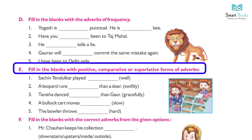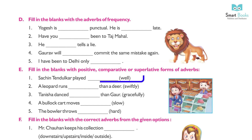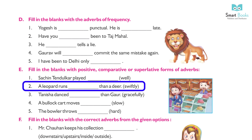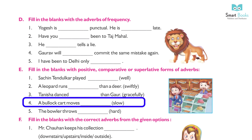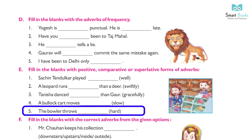Fill in the blanks with the positive, comparative, or superlative forms of the adverb. 18. Sachin Tendulkar played well. 19. A leopard runs more swiftly than a deer. 20. Tanisha danced most gracefully. 21. A bullock cart moves slowly. 21. The baller throws hard.